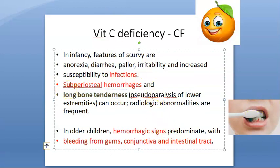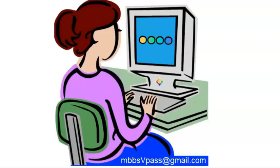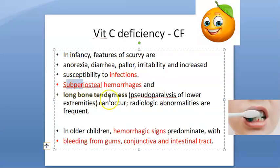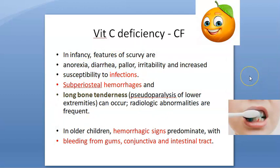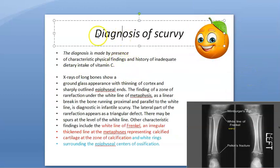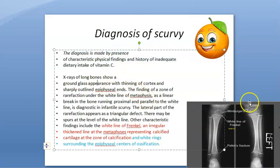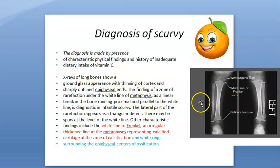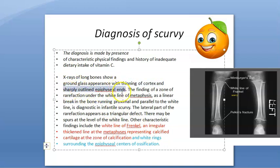Did you understand vitamin C deficiency? How will you identify it as a doctor? These are vague symptoms except for the hemorrhage. Now for diagnosis of scurvy, you look at dietary history and x-rays. On x-ray you will see thinning of cortex, ground glass appearance, sharply outlined epiphyseal end, and there is a white line of metaphysis called the white line of Frenkel.